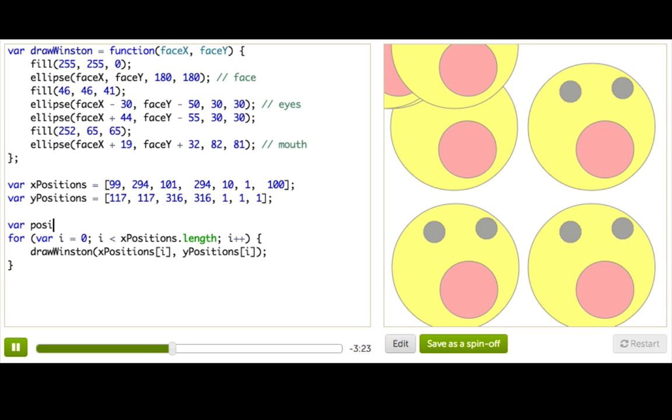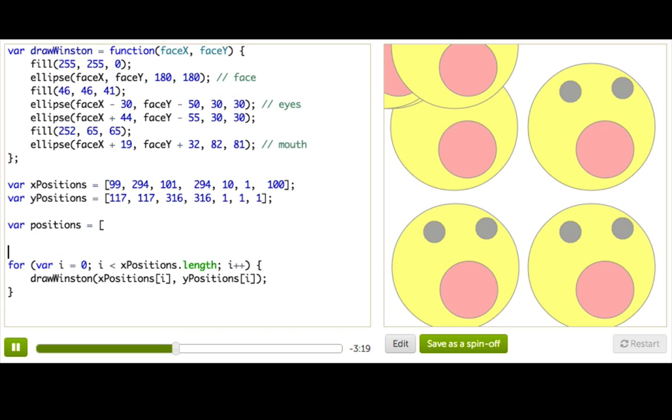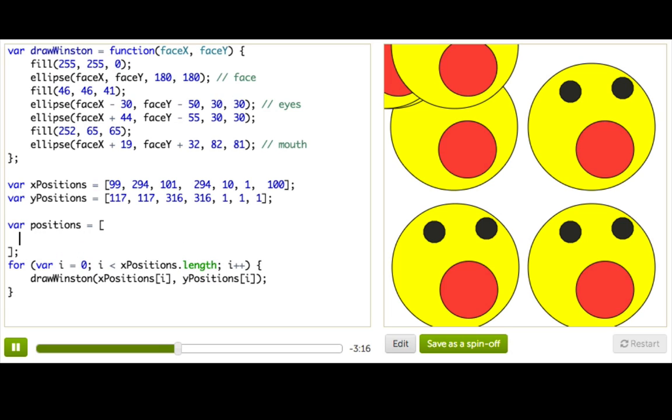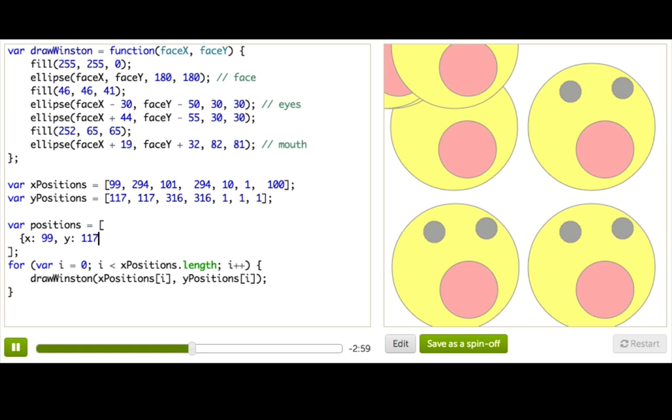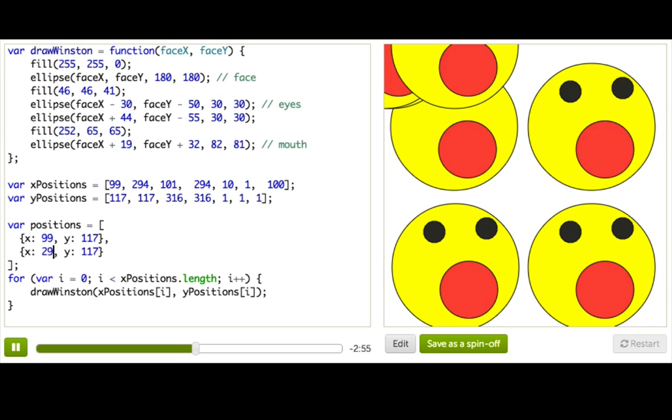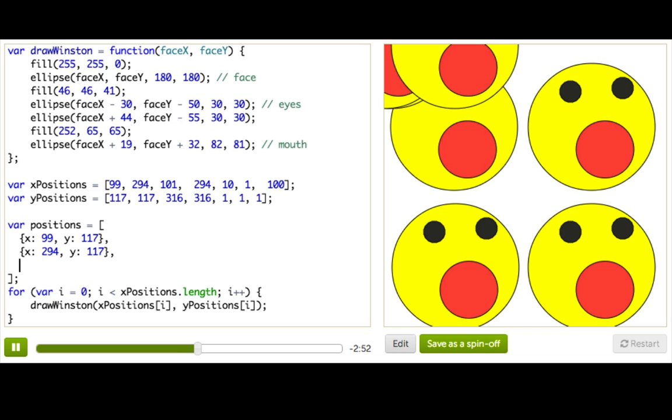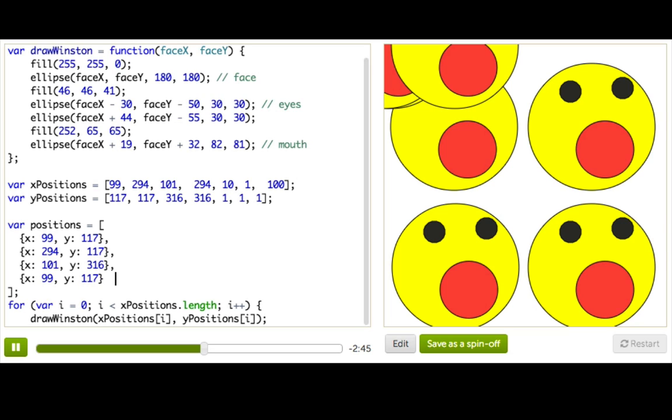We'll say var positions equals, and this is going to be an array as well. But each element, instead of being a number, is going to be an object. So here we have our curly brackets, and then we're just going to say x: 99, y: 117. So now we have one of our positions in here. And then we'll add another one. x should be 294, 117. The third one is going to be 101, 316. And the final one is 294 and 316. So now we have an array of objects where each object has x and y properties in it.